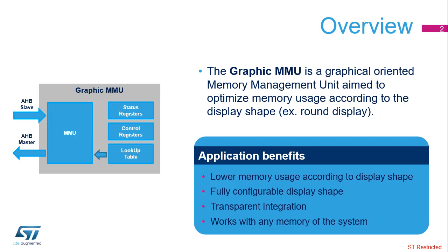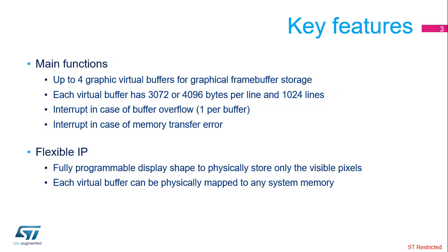The Chrome GRC works with any memories and any masters of the STM32. It is seen by the masters of the STM32 system as four virtual buffers to store the graphical frame buffer. Each virtual buffer consists of 1,024 lines with 3,072 or 4,096 bytes per line. The size of each line is configurable by software.